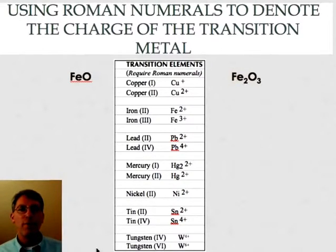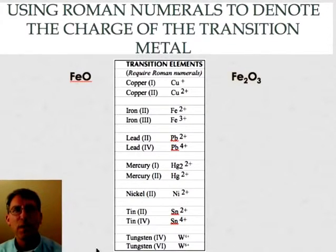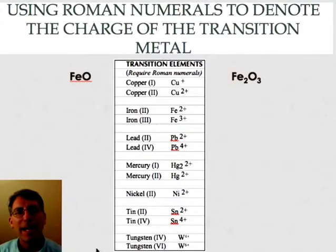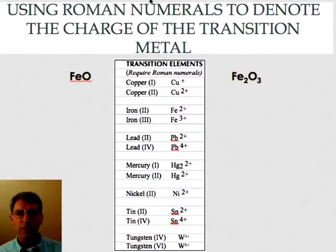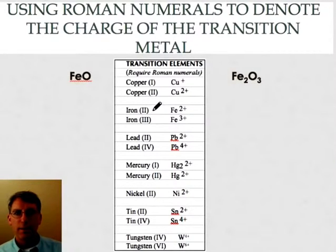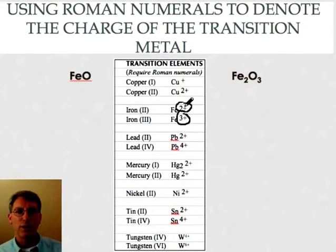So when we have metals, especially transition metals that will take multiple charges, we sort of have to do the same thing. We can't just call this iron any longer because iron actually comes in two different forms. We've got an iron down here that takes a plus two charge and an iron that takes a plus three charge.